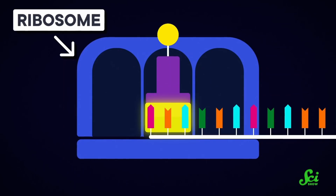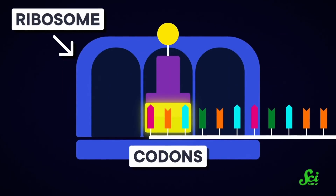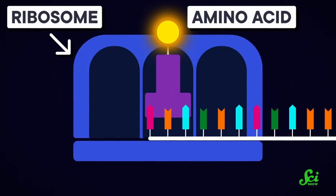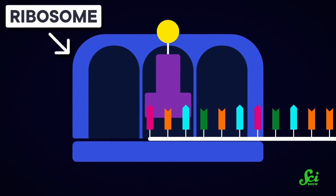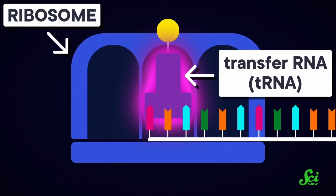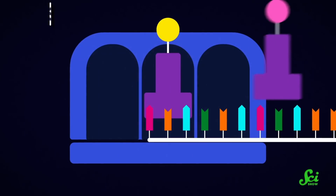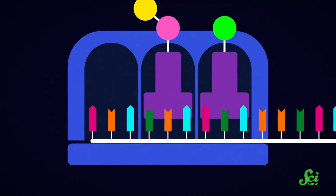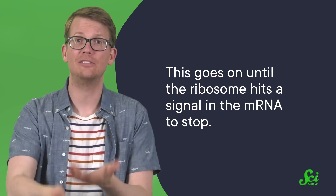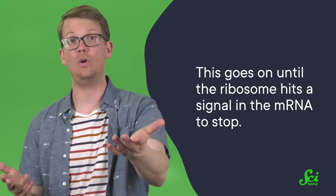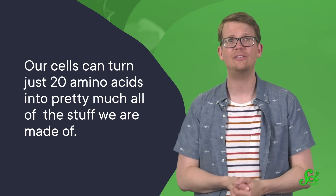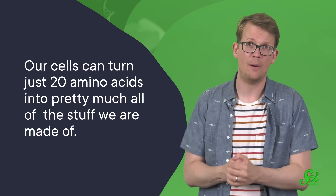This mRNA is then transported to a protein factory called a ribosome. There, the ribosome reads the open-faced mRNA in three-letter chunks called codons. Each of these codons corresponds to one of the building blocks of proteins called amino acids. As the ribosome reads the codons, a molecule called a transfer RNA, or tRNA, brings in the matching amino acid. The ribosome links the amino acids together in a chain in the same order as the codons in the mRNA. This goes on until the ribosome hits a signal to stop, at which point it releases the amino acid chain, which is now ready to become a finished protein. And in this way, our cells can turn just 20 amino acids into pretty much all of the stuff we are made of.